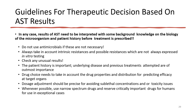Guidelines for therapeutic decisions: in any case, results of susceptibility testing need to be interpreted with background knowledge of the organism's biology and patient history. Do not use antimicrobials if they are not necessary. Take into account natural resistance and possible resistance not always expressed in in vitro testing. Check for unusual results. Patient history is very important — including underlying disease and previous treatment. Drug properties and distribution should be considered for predicting efficacy, and whenever possible, use narrow-spectrum antibiotics, reserving critically important drugs for exceptional cases.